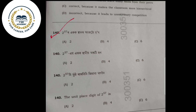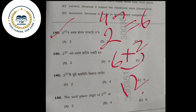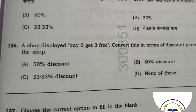Question 140: The question is 2 to the power 57 — what is the unit digit? We know that 2 to the power 4 equals 16, so the unit digit cycles. 6 into 2 gives 12, so the unit digit is 2. Option A will be the correct option.